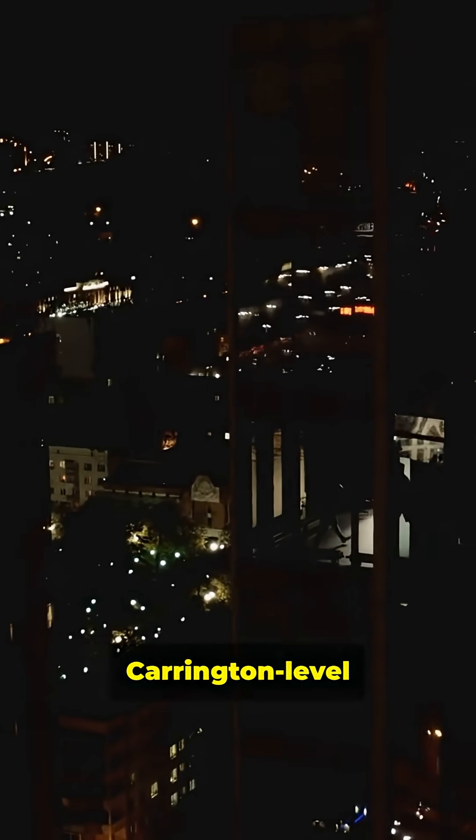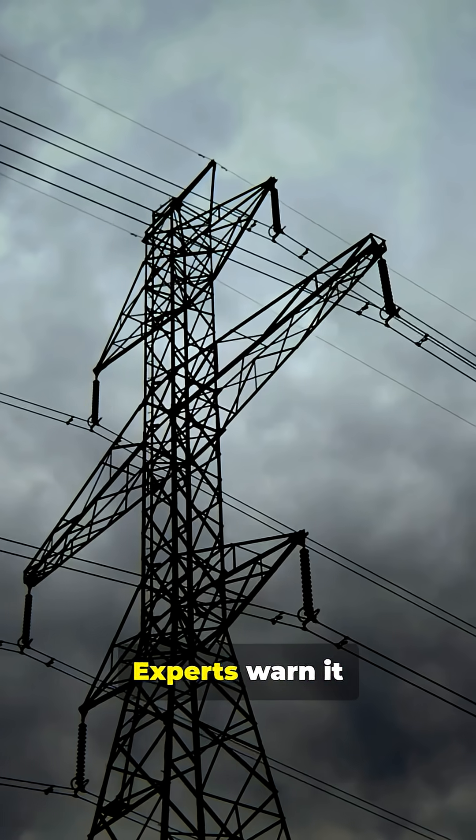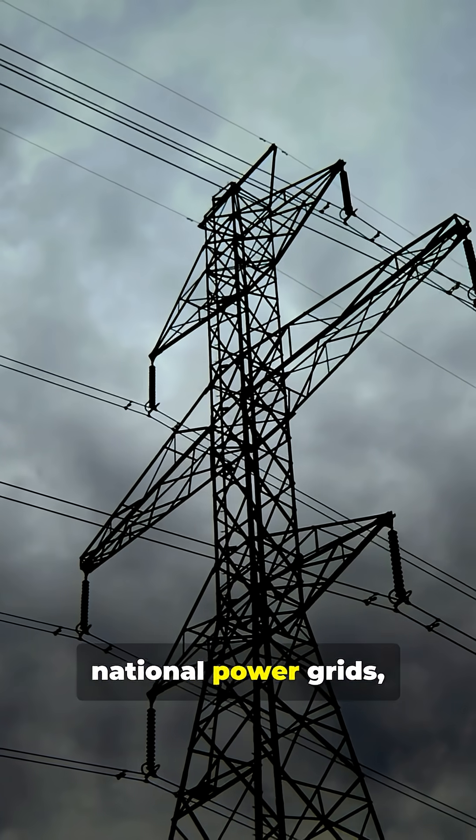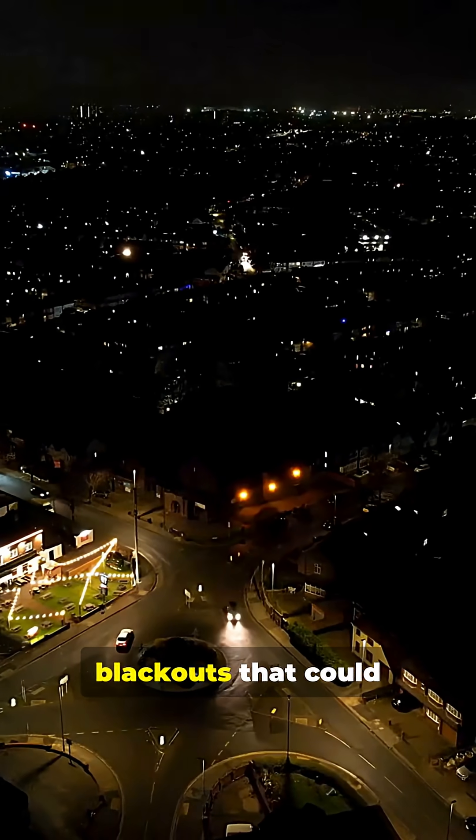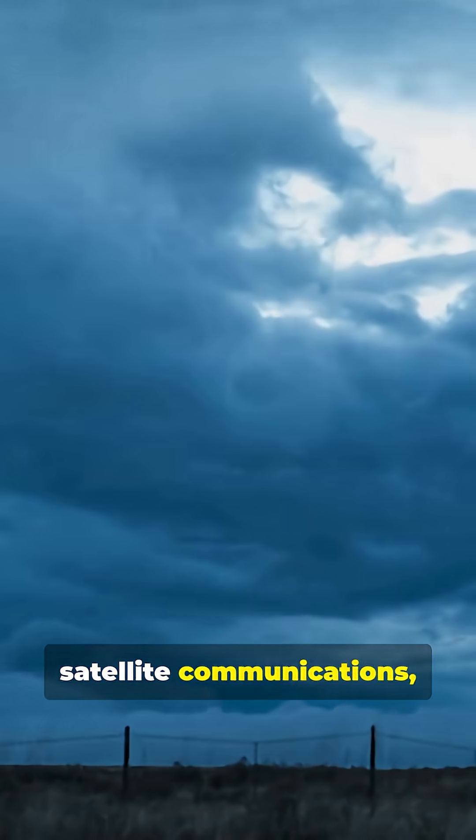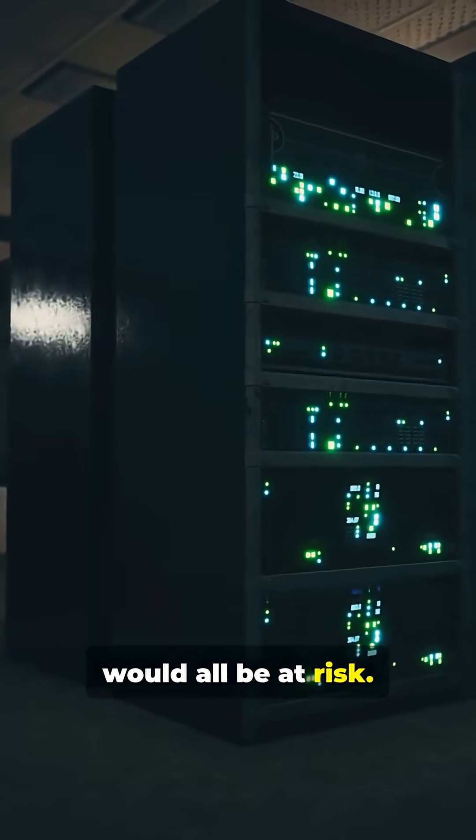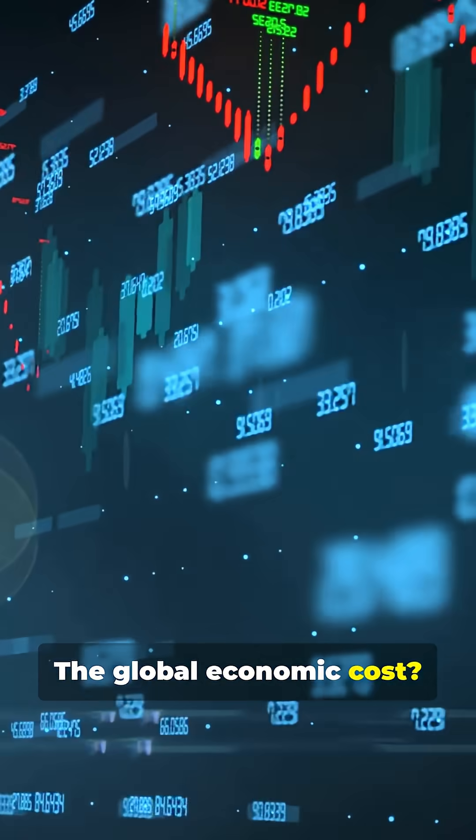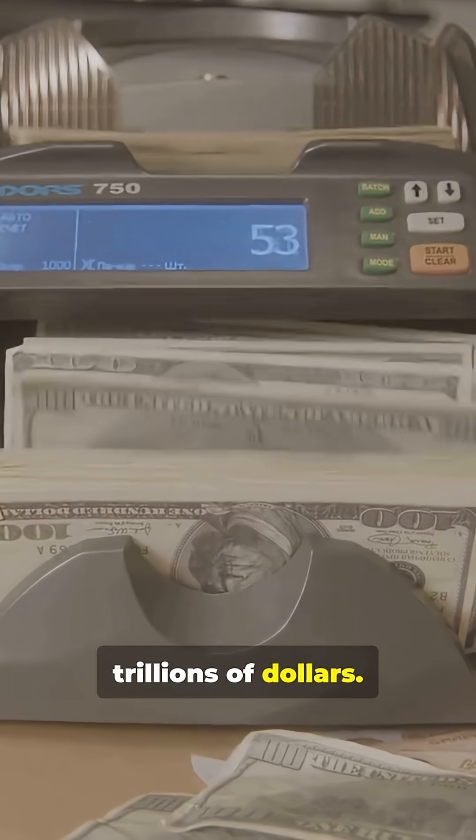But a Carrington-level event today would be infinitely more devastating. Experts warn it could overload national power grids, causing cascading blackouts that could last for months, even years. GPS, satellite communications, and the Internet would all be at risk. The global economic cost? Potentially trillions of dollars.